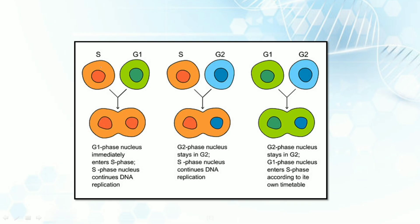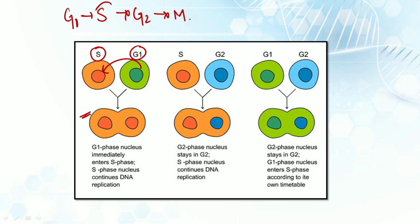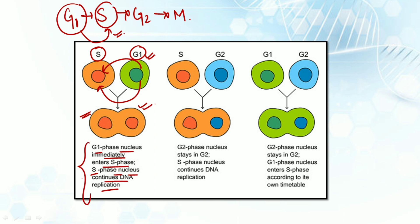Let's understand experiment case one. When the S phase cell and the G1 phase cell were intermixed, a hybrid was formed and the G1 phase nucleus immediately entered into the S phase. The S phase nucleus continued DNA replication. So when cells undergoing S phase and G1 phase were mixed together, the G1 phase converted and entered directly into the S phase.